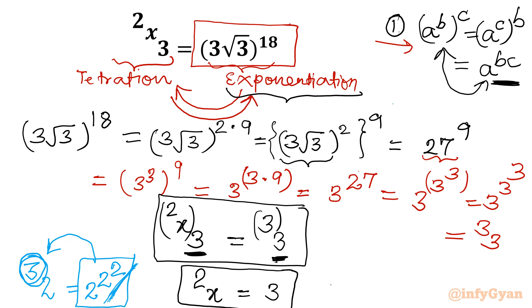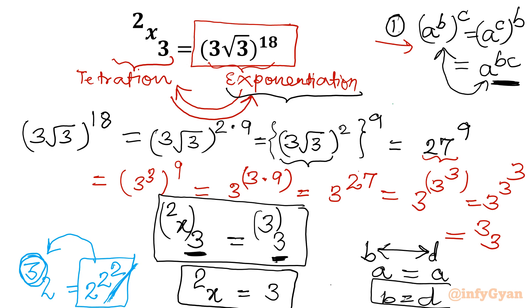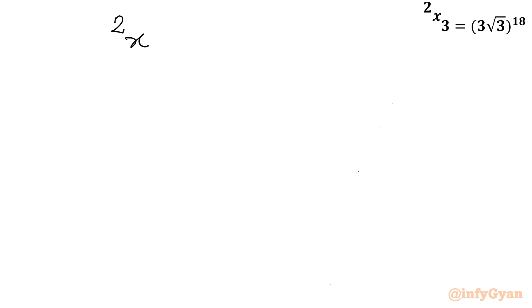Since if a superpower b equals c superpower d and c equals a, then b must equal d — the superpowers must be equal. So we get x superpower 2 equals 3, which means x^x = 3.